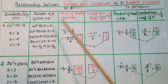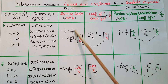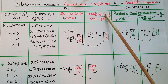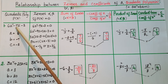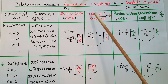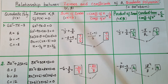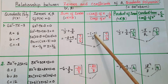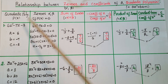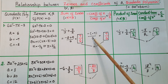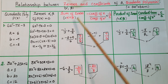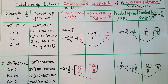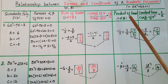The sum of zeros: alpha + beta = -1/3 + 3/2 = 7/6. This equals minus the coefficient of x divided by the coefficient of x², that is -b/a = -(-7)/6 = 7/6. So sum of zeros equals -b/a, which is minus coefficient of x by coefficient of x².